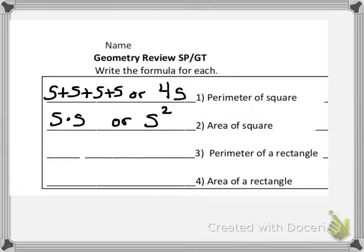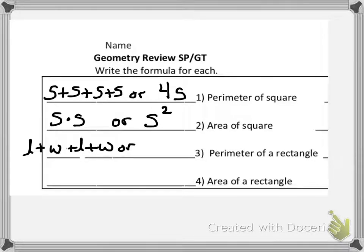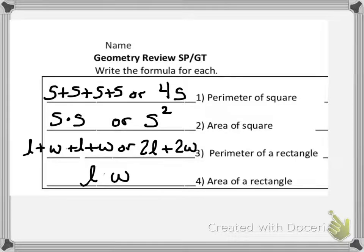Number 3, to find the perimeter of a rectangle we could add up the length plus the width plus the length plus the width, or 2 times the length plus 2 times the width. Number 4, the area of a rectangle is length times width.